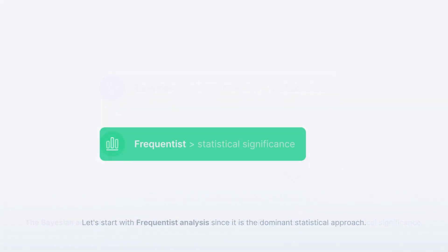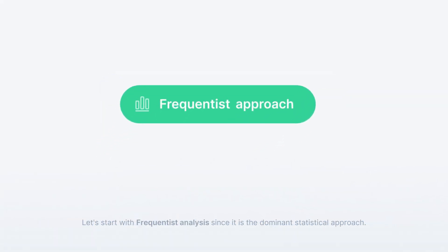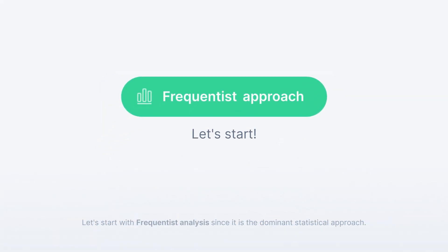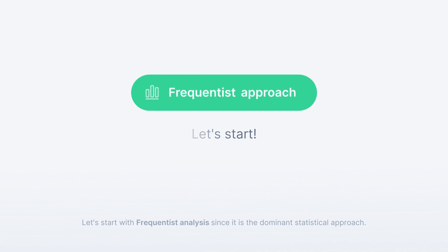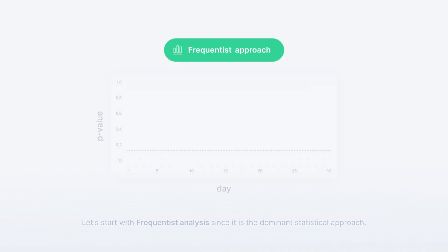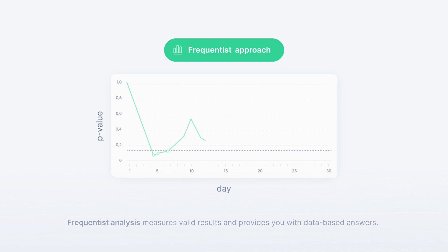Let's start with Frequentist analysis, since it is the dominant statistical approach. Frequentist analysis measures valid results and provides you with data-based answers. Here's a quick run through the steps involved in a Frequentist A/B test.